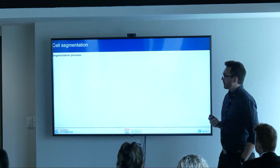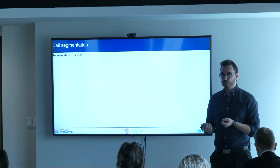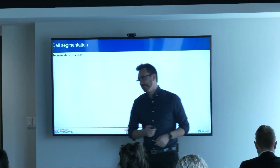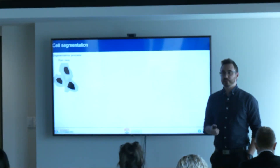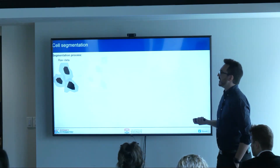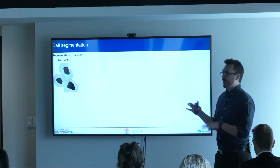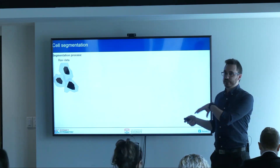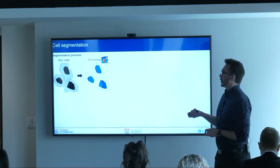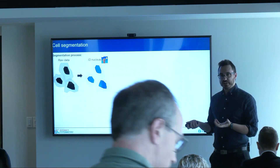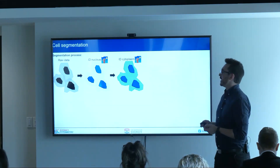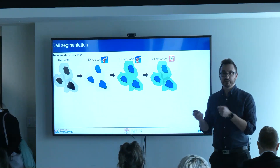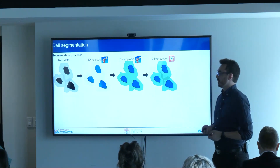So cell segmentation — the nominal process most of us have been exposed to. We have images and we essentially want to find the boundary between cells so we can isolate individual single-cell data. Usually we identify a nucleus, which is the anchor for each cell, identify the cytoplasm, and then have the boundary between each cell predicted based on one of a number of approaches.